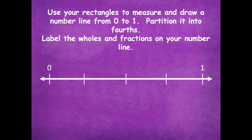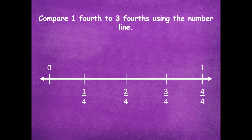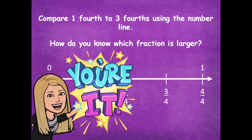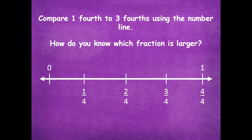All right, here is my number line — zero to one — and it's partitioned into fourths. I can label those parts: one-fourth, two-fourths, three-fourths, and four-fourths, which is also known as one whole. Now compare one-fourth to three-fourths using your number line. Pause the video, find where one-fourth is, find where three-fourths is, compare them, find out which fraction is larger, and click play when you're ready to go over it together.